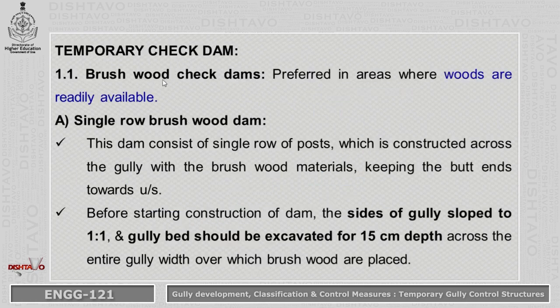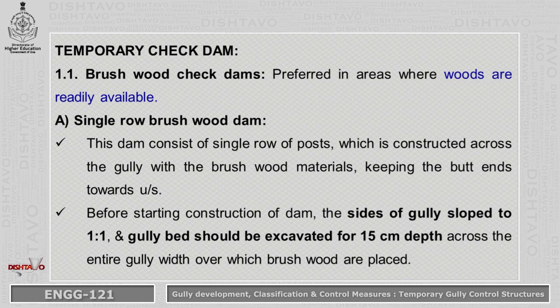First is the temporary check dam. Brushwood check dams are preferred in areas where wood is readily available. Single row brushwood dams are constructed of a single row of posts across the gully with brushwood material along that gully, keeping the butt ends towards the upstream side. Before construction, the sides of the gully slopes are made at a 1:1 ratio and the gully bed is excavated to a depth of 15 centimeter across the entire width.